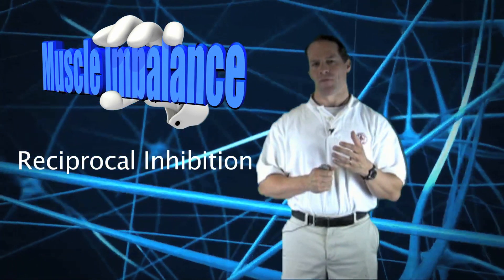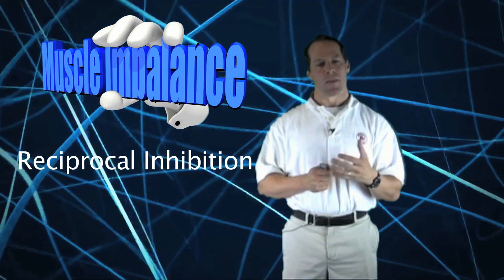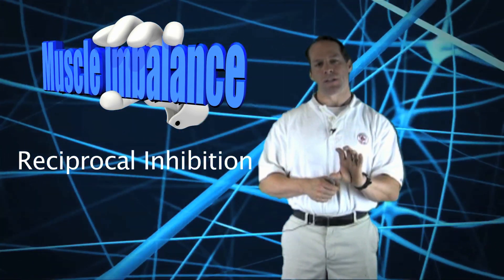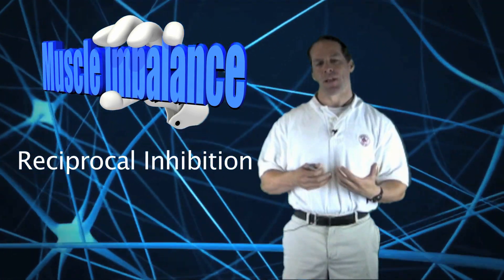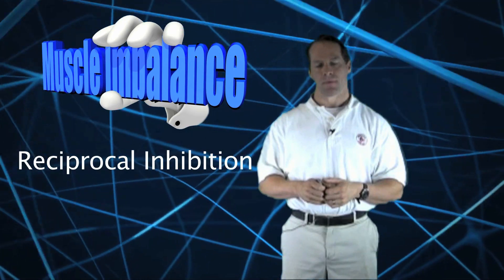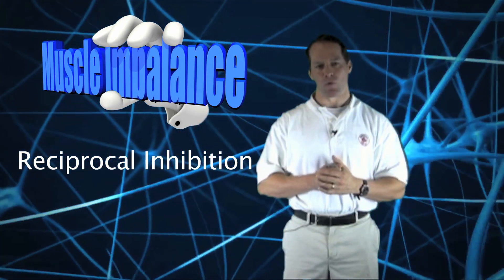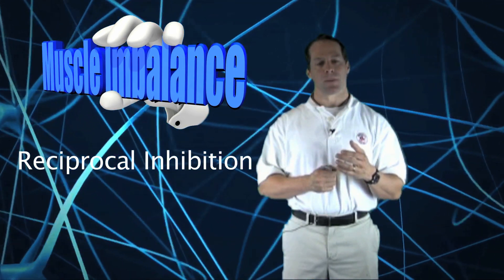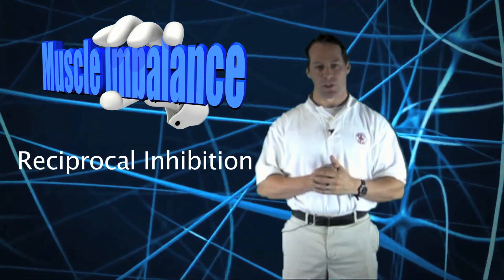Reciprocal inhibition refers to muscle inhibition caused by a tight agonist, the muscle that's causing the movement, which decreases the neural drive of its functional antagonist, the muscle that's opposing the movement. This results in an altered force-couple relationship and leads to the development of faulty movement patterns and poor neuromuscular control.